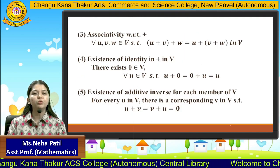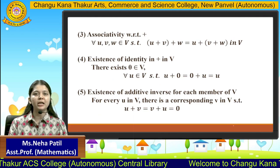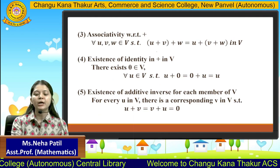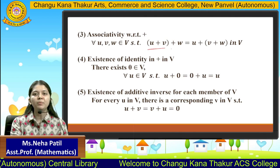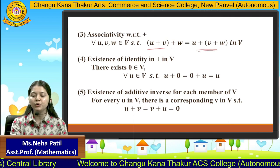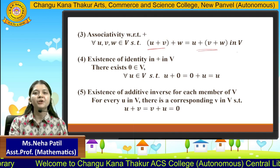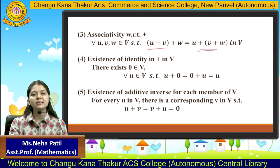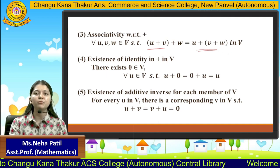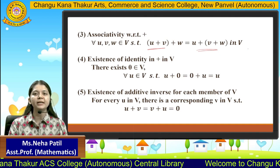Moving to the third property — associativity of addition. It says that for any three elements belonging to the set, (u + v) + w will equal u + (v + w). This means rearrangement of brackets is possible; even if we rearrange the brackets, we still get the same answer belonging to the set.